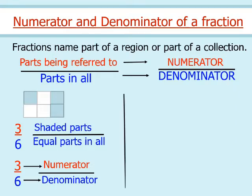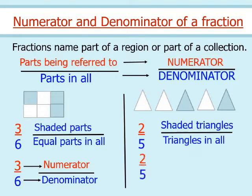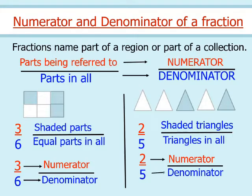Now look at the second example. A collection of 5 triangles is given and out of 5 triangles, 2 triangles are shaded. So the fraction for the shaded triangles is shaded triangles by triangles in all, that is 2 by 5. In fraction 2 by 5, 2 is the numerator and 5 is the denominator.